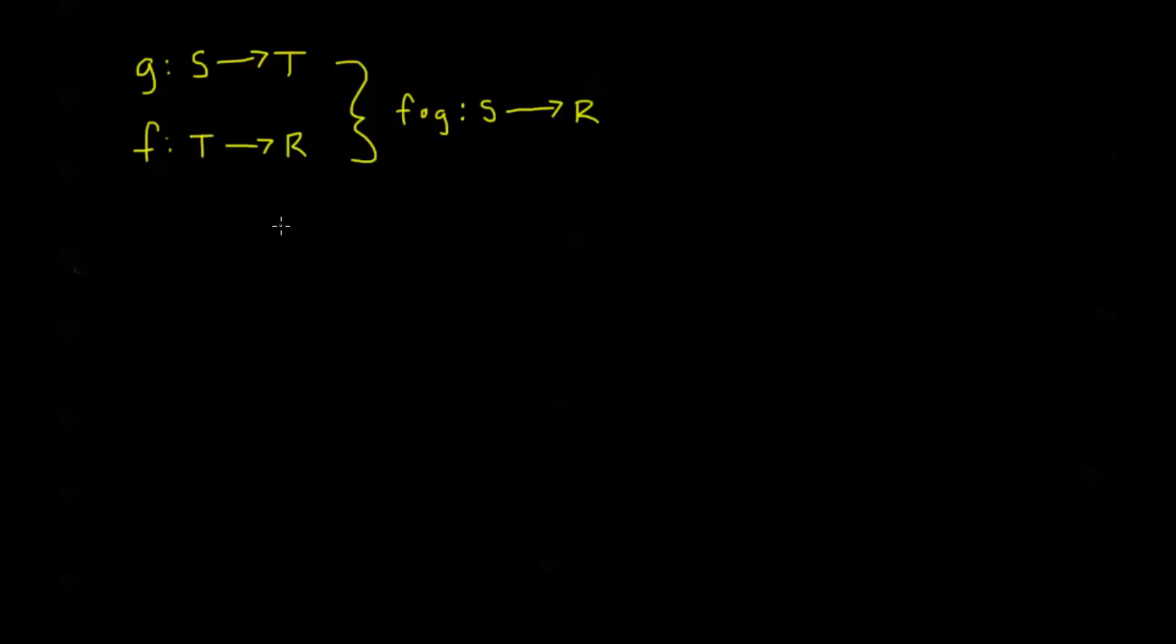So we can think of it as performing g first and then performing f on the result. In other words, I can think of the composition f composed with g of x. This is going to be the same thing as f where I'm plugging in g of x for that particular x. I'm just performing g first and then taking that result or that image of x in g, and I'm plugging that into f and getting a new image, f of g of x.